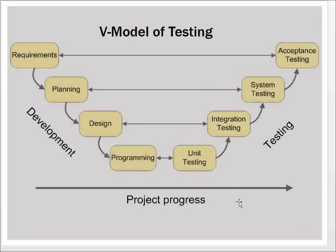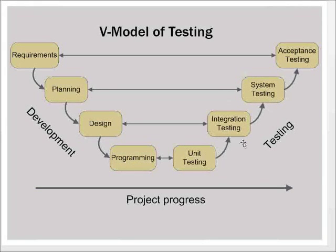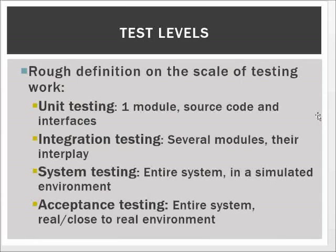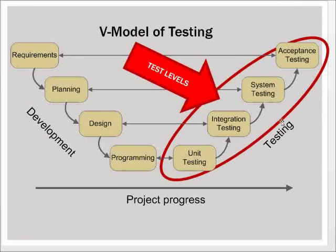As the project progresses, we go from requirements to planning, to design, and so on. We first go down into creating the modules, then upward by making one component, then several, then the entire system, and finally seeing that all requirements are met. The test levels are: unit testing, integration testing, system testing, and acceptance testing.